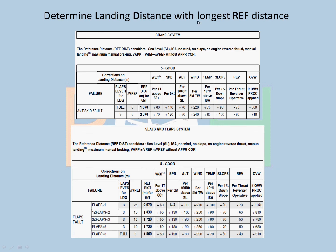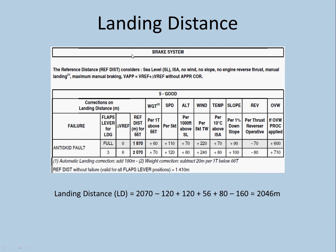V approach is set at 145 knots. Now we determine the landing distance with the longest reference distance. The flaps are stuck at 3, so we compare: anti-skid fault at flap 3 gives a reference distance of 2070 m, and flaps fault at flap 3 gives 1720 m. We will calculate for the brake system — anti-skid fault — as it has the longest reference distance of 2070 m.